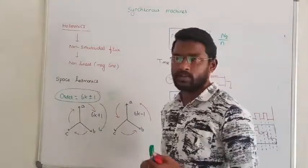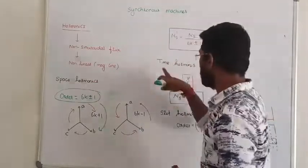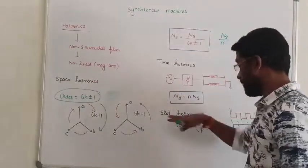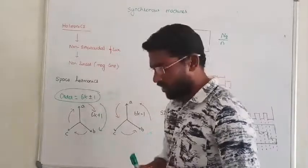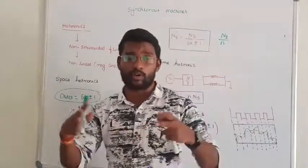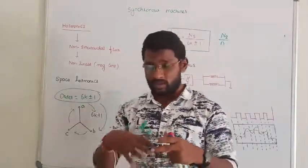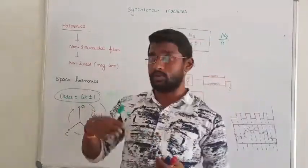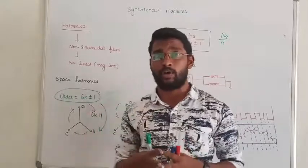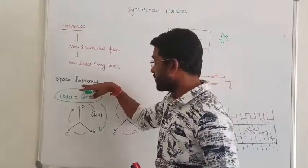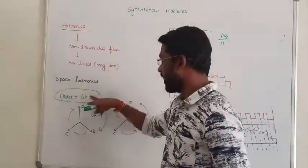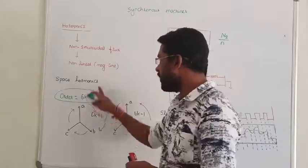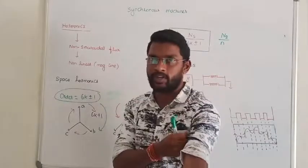The first one is space harmonics, the second one is time harmonics, and the third one is slot harmonics. Regarding space harmonics: stator or rotor waveforms produce flux in non-sinusoidal waveforms. Space harmonics are of the order 6k plus or minus 1. That is the order of space harmonics.